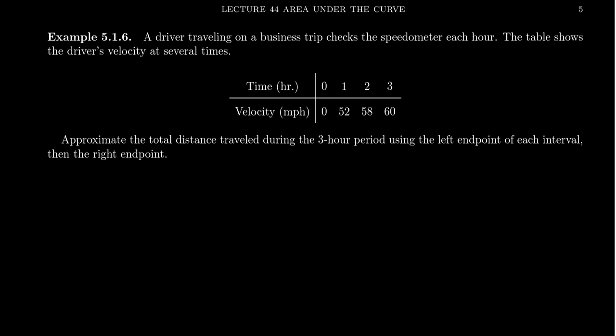Suppose we have a driver who's traveling on a business trip and he checks the speedometer every hour. And so the table here below shows the speed or the velocity. So we check the different times: zero hours, one hour, two hours, three hours, and we can check the velocity: zero miles per hour, 52, 58, and 60. And so we want to approximate the total distance that the driver goes during this three hour period.